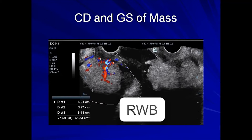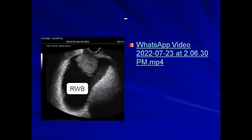There are areas of low-level echoes suggestive of a bladder hematoma, keeping clinically with the frank hematuria observed. The mass measured 6.21 by 3.97 by 5.4 centimeters, giving a total volume of 66 cubic centimeters — a substantially large mass. Color Doppler shows intra-lesional vascularity. Using the endocavity probe introduced rectally, a longitudinal section of the same mass shows low-level echoes in keeping with hematoma, and the bladder wall is thickened.